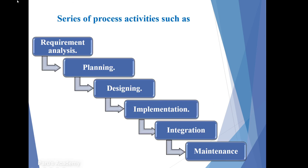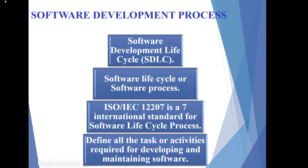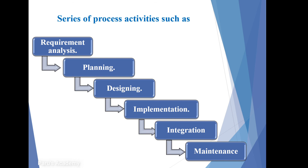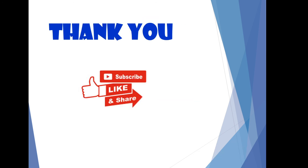This is all about software development process, also called software development life cycle or software process. It has six phases: requirement analysis, planning, designing, implementation, integration, and maintenance. I hope you all understood. If you have any doubt, please comment in the comment section. Thank you for watching.